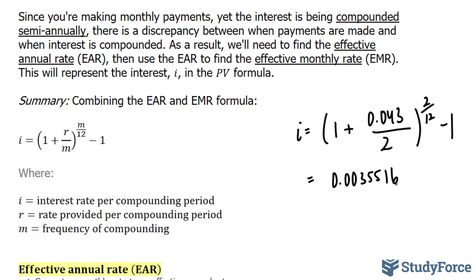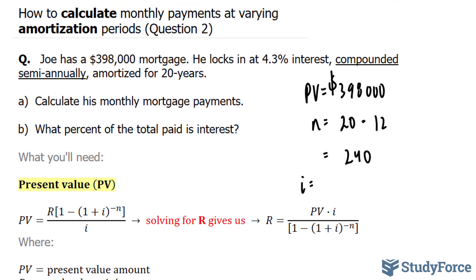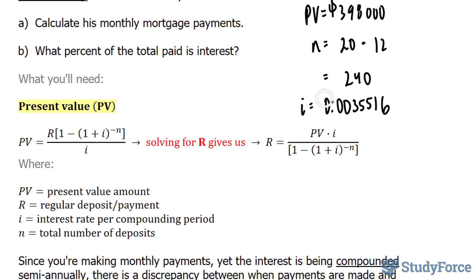This will represent the i value in our present value formula. Now we will plug in these three values into this formula. Now, your teacher might not give you this formula. Your teacher might give you the present value formula. You can solve for R by multiplying both sides by i and then subsequently dividing both sides by this part of the original equation. Plugging these values in...